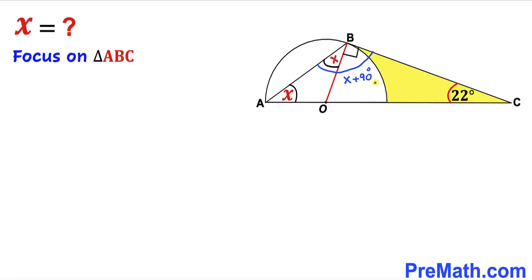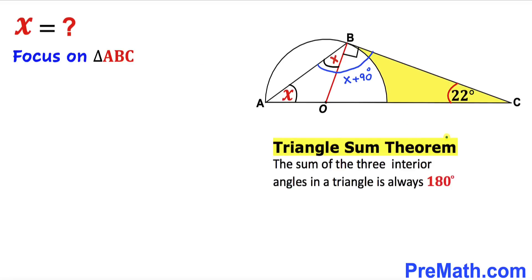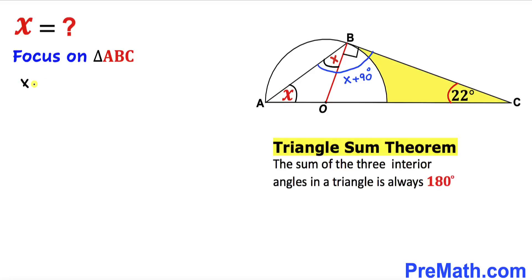Let's focus on the big triangle ABC and recall the triangle sum theorem. According to this theorem, the sum of three interior angles in a triangle is always equal to 180 degrees. Therefore in our case, x plus (x plus 90 degrees) plus 22 degrees must equal 180 degrees.